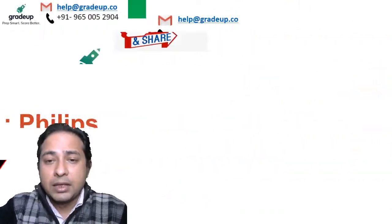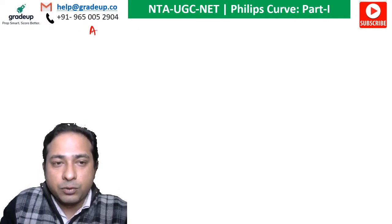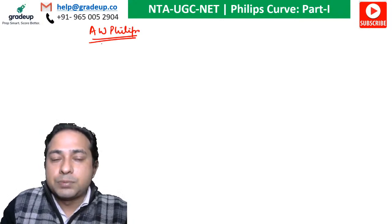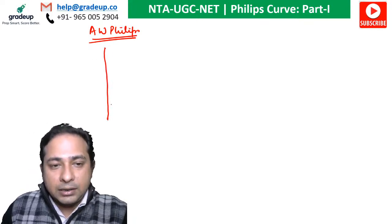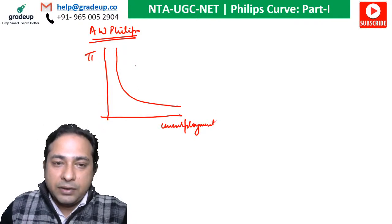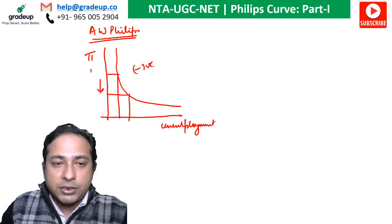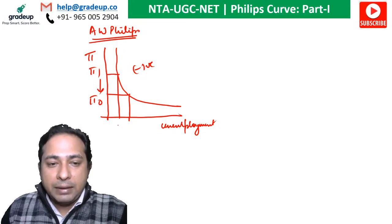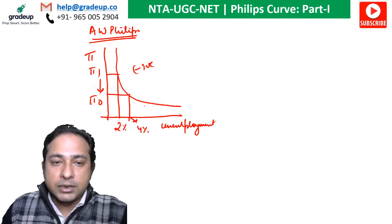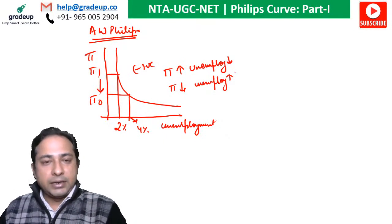Let me start from scratch with this topic. The first version was given by AW Phillips. He gave us an inverse Phillips curve — on the vertical axis we have inflation, and on the horizontal axis we have unemployment. This indicates an inverse relationship: as inflation rises, unemployment falls. If inflation goes from pi-1 to pi-0, unemployment moves from, say, 2% to 4%. So as inflation rises, unemployment falls.